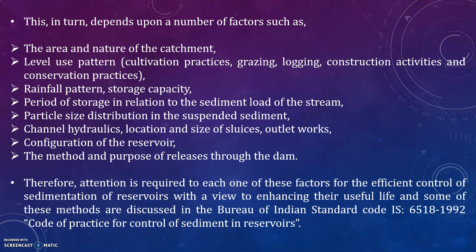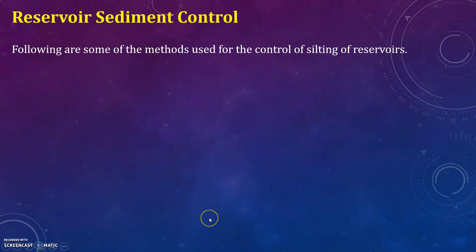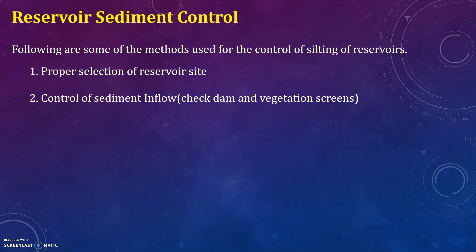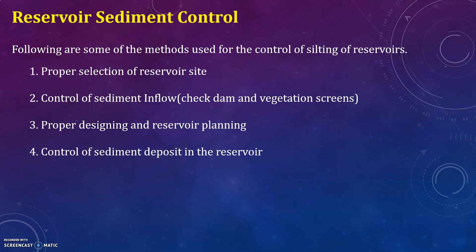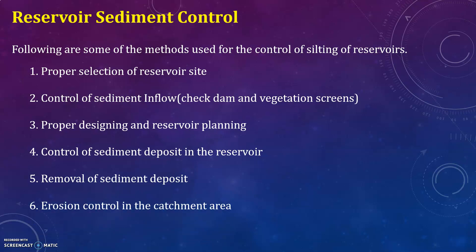Attention is required to each of these factors for efficient control of sedimentation, with a view to enhancing the useful life of reservoirs. Some of these methods are discussed in the Bureau of Indian Standards code IS 6518-2:1992, Code of Practice for Control of Sediment in Reservoirs. The methods used for control of silting include: proper selection of the reservoir site, control of sediment inflow by check dam construction or vegetation screens, proper designing and reservoir planning, control of sediment deposit in the reservoir, removal of sediment deposits, and erosion control in the catchment area.